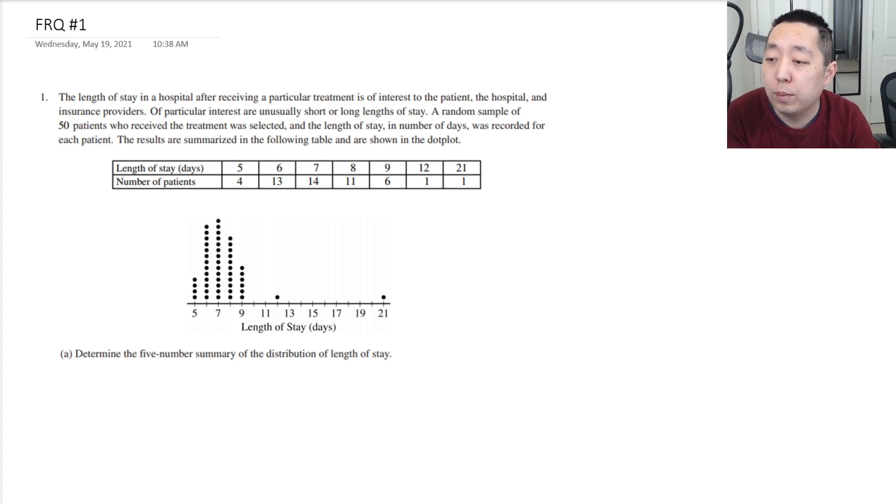The length of a stay in a hospital after receiving a particular treatment is of interest to the patient, the hospital, and the insurance providers. Of particular interest are unusually short or long lengths of stay. A random sample of 50 patients received this treatment was selected, and the length of stay in number of days was recorded for each patient. The results are summarized in the following table and shown in the dot plot. Determine the five-number summary of the distribution of the length of the stay.